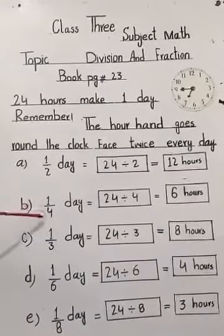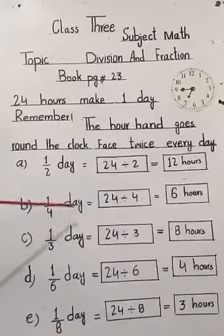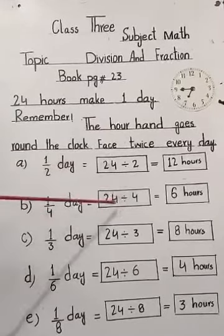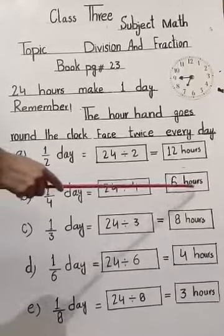B, 1 over 4 days. It means 24 hours divided by 4. 4 sixes are 24, 6 hours.